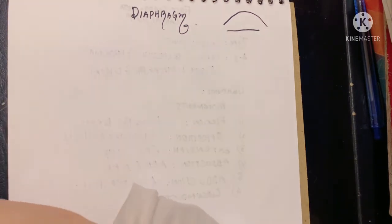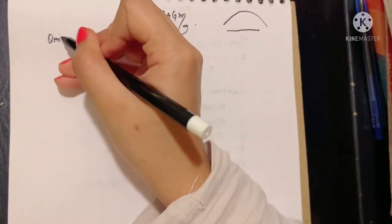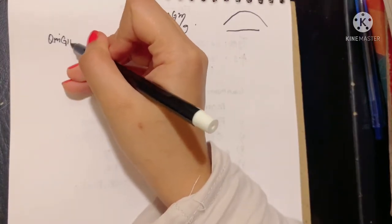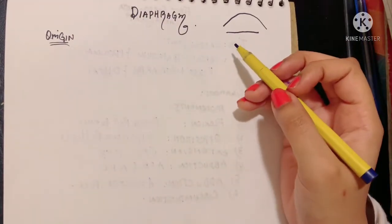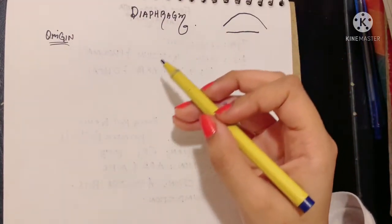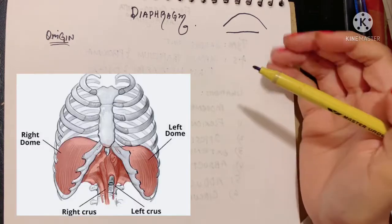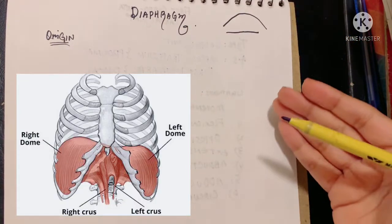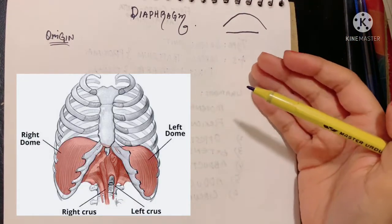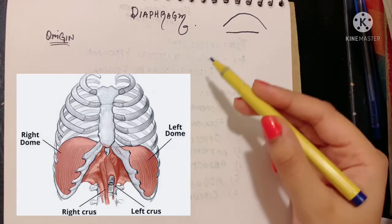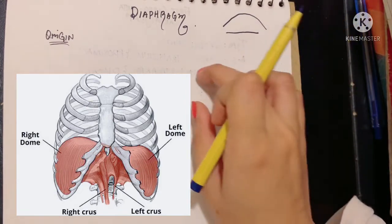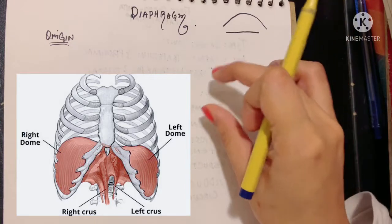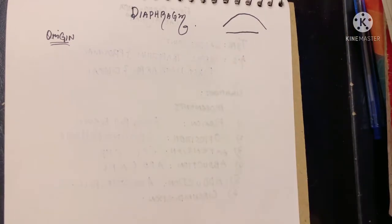The diaphragm originates in a circumferential manner from the entire lower part of your thoracic cage. As you know, the entire thoracic cage is formed anteriorly by the sternum, on either side by the ribs, and posteriorly by the thoracic vertebra.